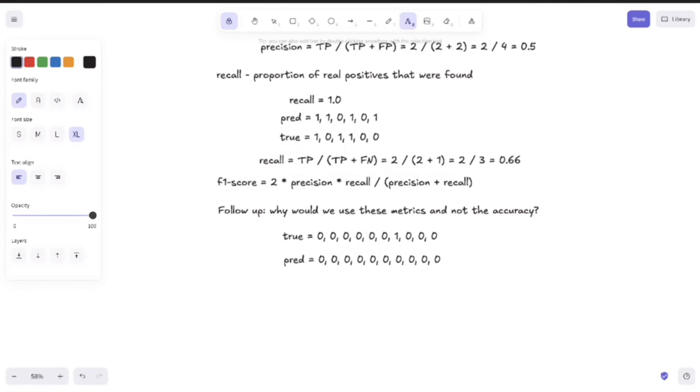In this case, the accuracy, which is equal to the number of true positives plus the number of true negatives divided by the number of samples, is equal to 9 divided by 10, which is 0.9. So 90% accuracy, just by predicting only 0 without training any model, which might sound fantastic, but it's actually a pretty bad model because we missed the only positive sample, which in many cases is quite important.